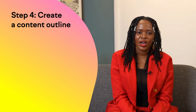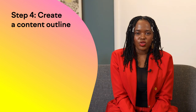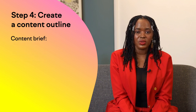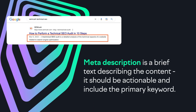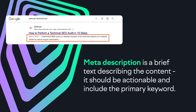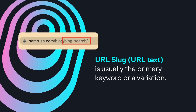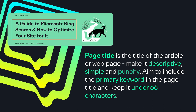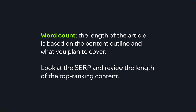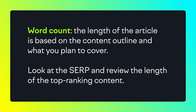Moving on to step four: create a content outline. Let's assume you've decided to start with 'best meeting scheduler.' You need a structure to guide you — this is what we call a content brief. It will detail meta information, internal linking, the content outline, external links, and semantic entities. Meta information includes: a meta description — a brief text describing the content that should be actionable and include the primary keyword; a URL slug — usually the primary keyword or a variation; and a page title — descriptive, simple, and punchy, including the primary keyword and kept under 66 characters. Word count should be based on reviewing the length of top-ranking content in the SERP.